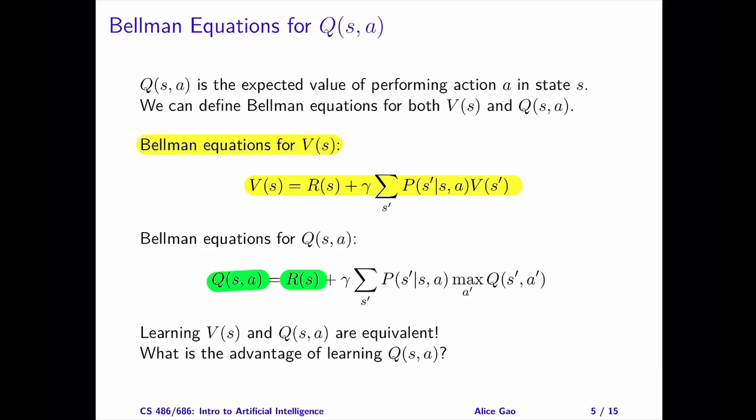If we perform action A, with some probability, we will reach the next state S prime. In state S prime, we will perform the optimal action A prime based on the Q values. The term the maximum of Q(S', A') gives us the agent's expected utility of performing the best action in state S prime.